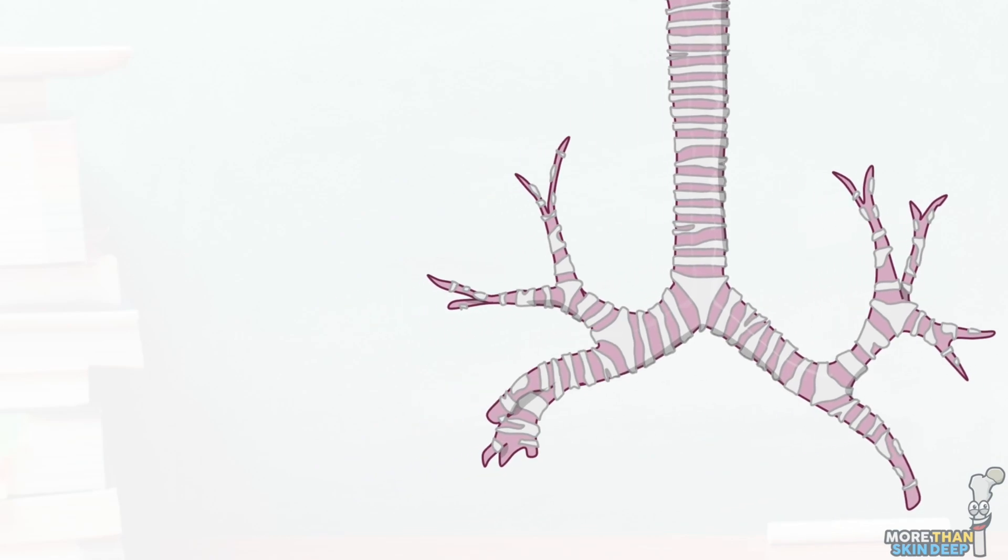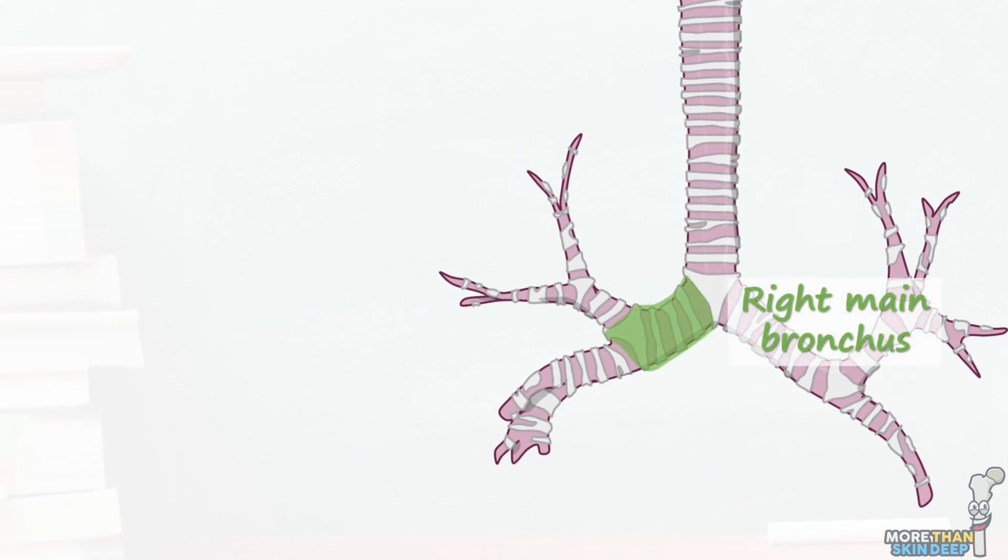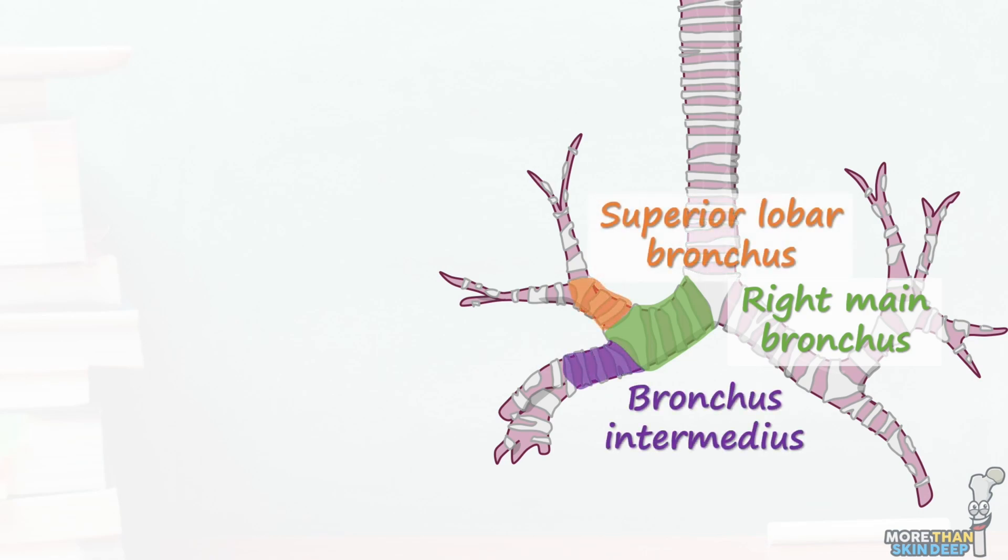Within the lungs, the main bronchi branch again. The right main bronchus first branches to the superior lobar bronchus and the bronchus intermedius, and the bronchus intermedius branches into the middle and inferior lobar bronchi. On the left it branches directly into the superior and inferior lobar bronchi.